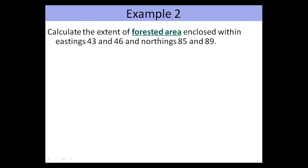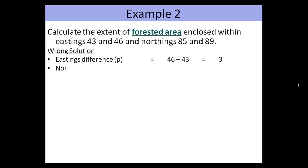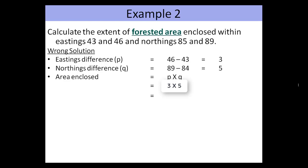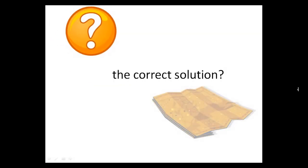There is another example: calculate the extent of the forested area enclosed within easting 43 to 46 and northing 85 to 89. The easting difference gives 3 blocks and the northing difference gives 5 blocks, so P × Q = 15 square kilometers. However, one must reconsider — the question asks for a forested area. Do you really think the forested area is of even shape? You are right — it is not of even shape. So what is the correct solution?